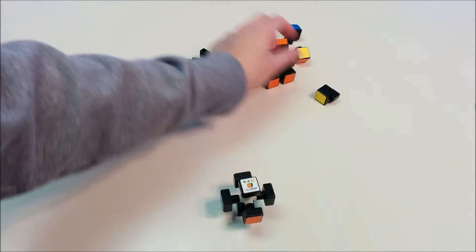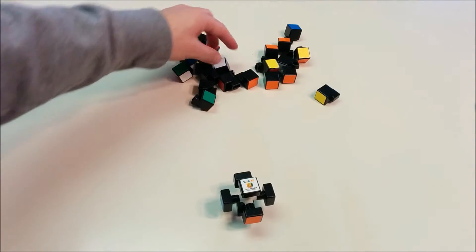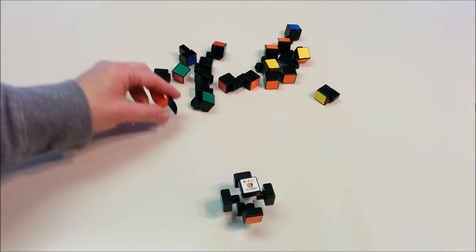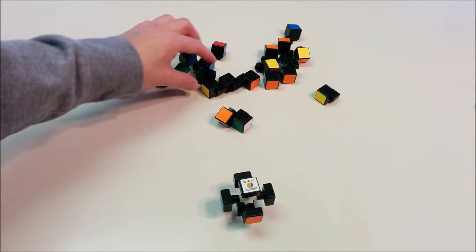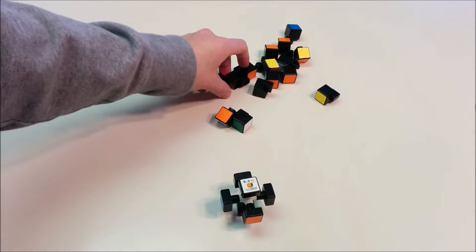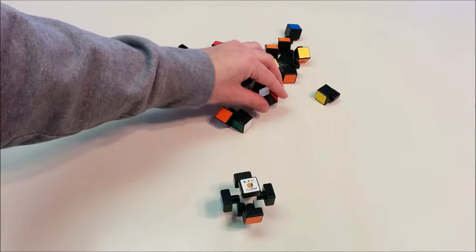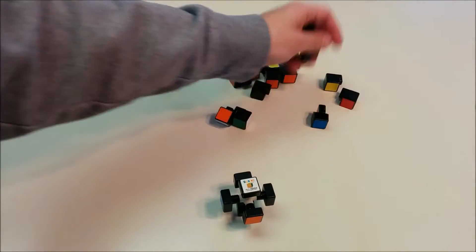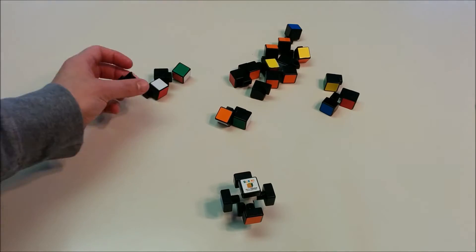Now before I put the cube back together, I'm going to sort the pieces. You can think about this like solving a jigsaw puzzle, where you separate the pieces into corner pieces, edge pieces, and middle pieces. For the Rubik's Cube, there's a similar grouping that we're going to use.